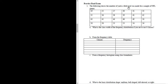The following shows the number of yards a field goal was made for a sample of NFL games. We have all of the data here in yards. Part A wants to know, what is the class width of the frequency distribution if you are to use six classes?